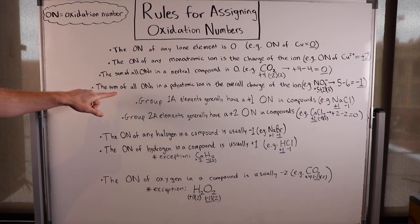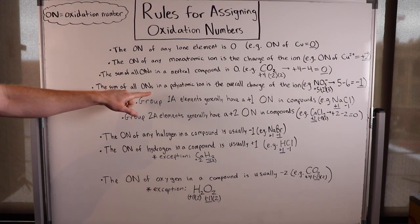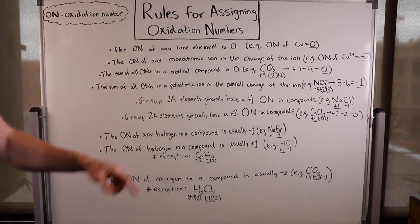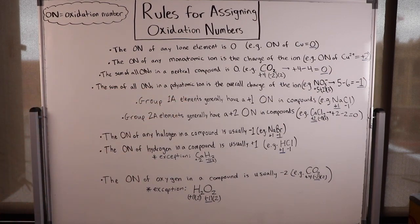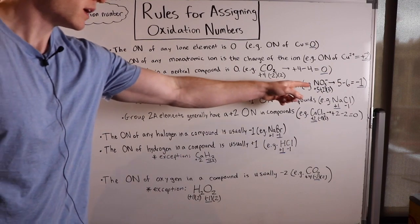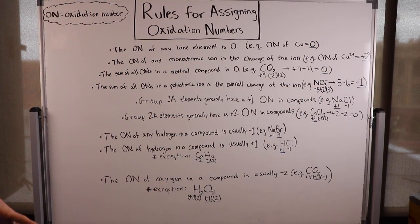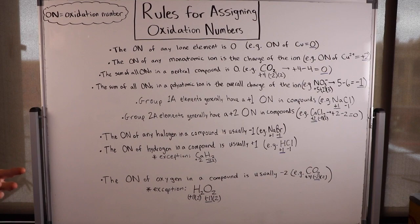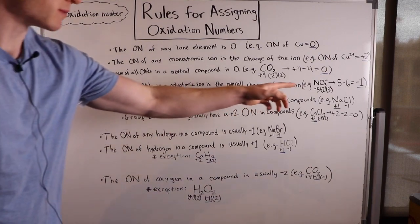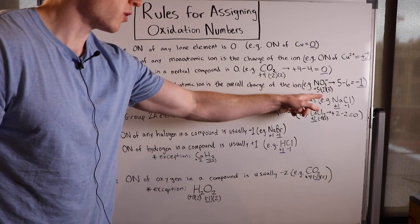The sum of all oxidation numbers in a polyatomic ion is the overall charge of the ion. So if we have an overall charge on a polyatomic ion, like nitrate — NO3⁻ — then the sum of the oxidation numbers must equal that charge, negative one.